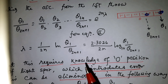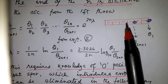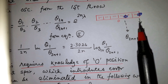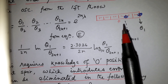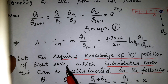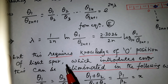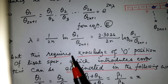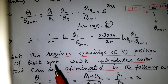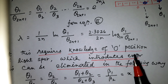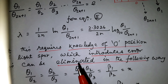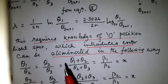However, this requires knowledge of the zero position of the light spot. Without accurate knowledge of the zero, we cannot find the exact values of theta_1 and theta_(2n+1), which introduces error. This error can be eliminated in the following way.